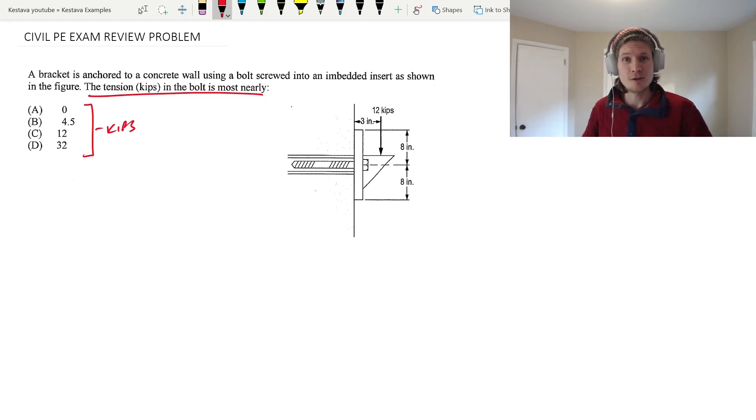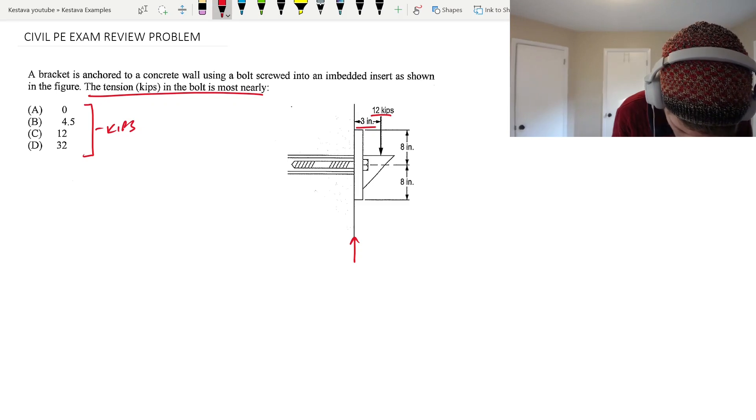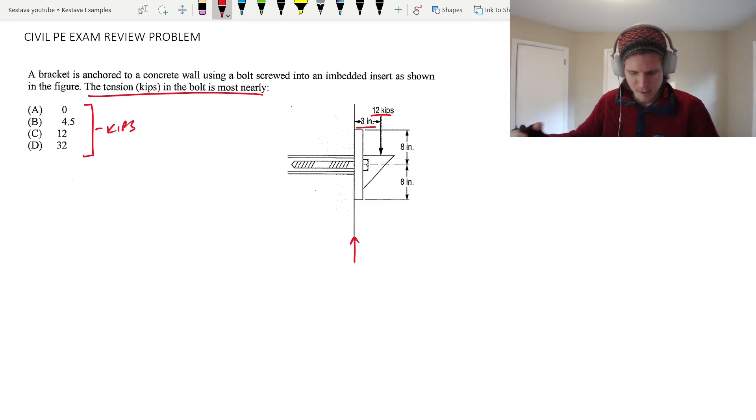So we have 12 kips acting downward, and that's acting 3 inches from the face of the concrete wall. So here's your concrete wall right here. So first, that generates a moment, right? Because we have a force and we have a perpendicular distance. So let's find that moment. And this is, as you can see, it's not specified in LRFD or ASD or anything like that. This is just a nominal capacity, so no load factors applied. They didn't give you anything that hints at needing to use load factors here.